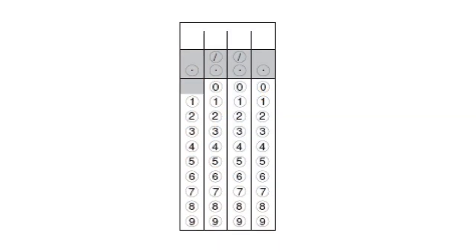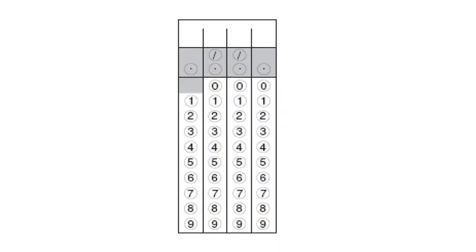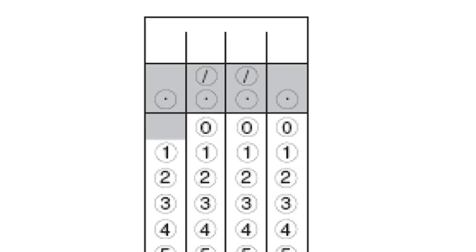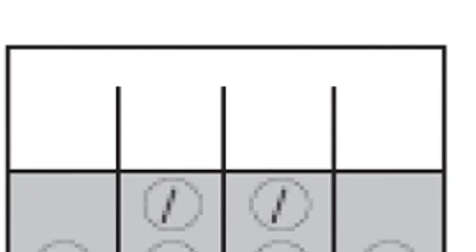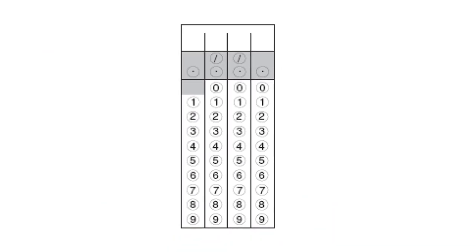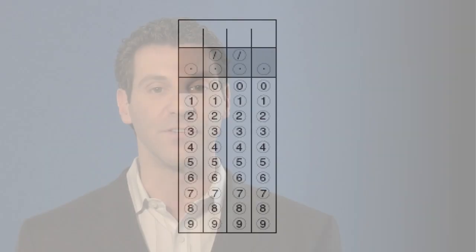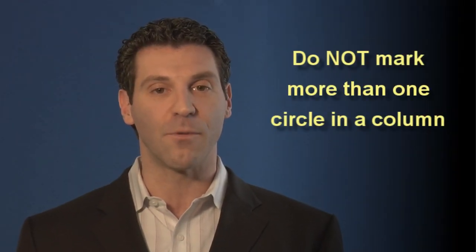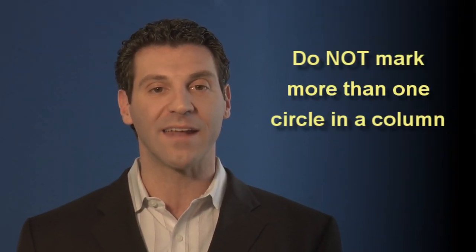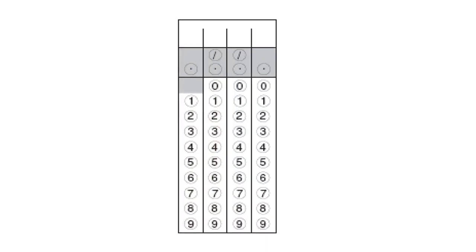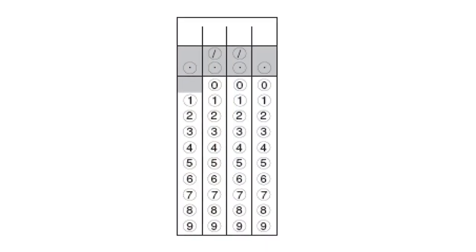Now let's discuss the gridding questions. On your answer sheet there are 4 columns with space on top to write your answers and bubbles below. The computer only grades what you have marked in the bubbles. Never mark more than one circle in a column or the problem will automatically be marked wrong. You do not need to use all 4 columns — if you don't use a column, just leave it blank.